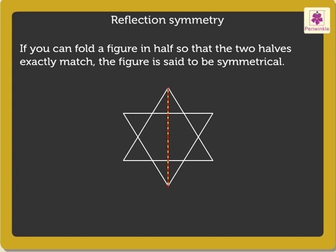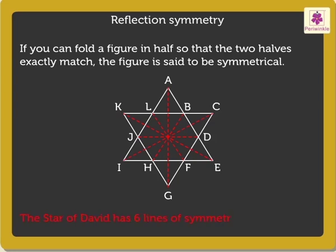The fold line is called the line of symmetry or axis of symmetry. Here, line AG is one such line of symmetry. The others are line BH, line CI, line DJ, line EK and line FL. Thus, we say that star of David has 6 lines of symmetry.